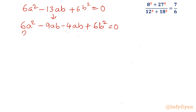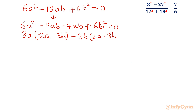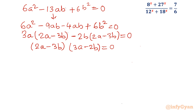Taking 3a common from the first two terms gives 3a times 2a minus 3b. Taking minus 2b common from the last two terms also gives minus 2b times 2a minus 3b. So ultimately it factors as 2a minus 3b times 3a minus 2b equal to 0.